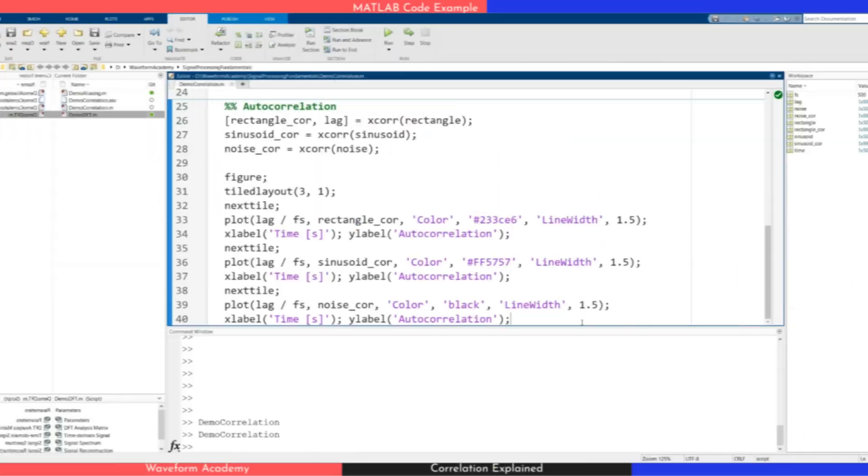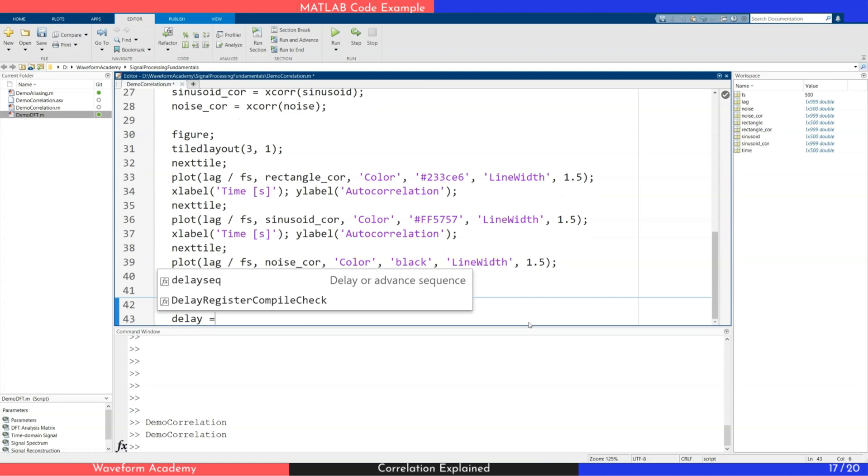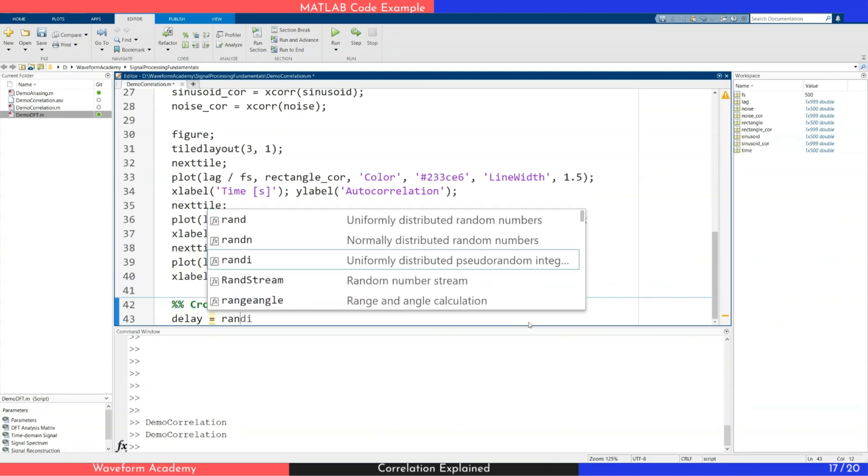Let me show you how. In this part, we demonstrate how cross-correlation can be used to detect a time delay between two signals. First, we generate a random time delay.